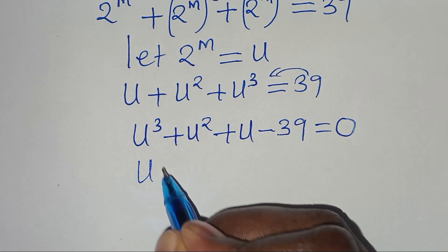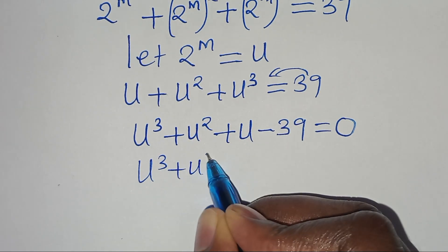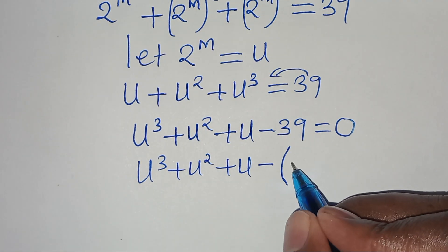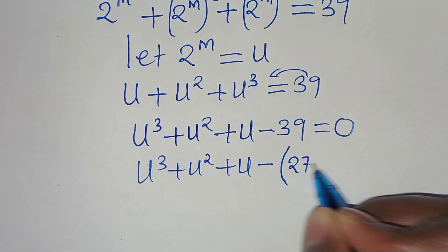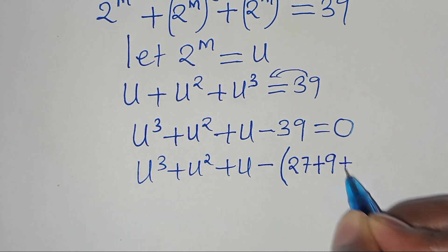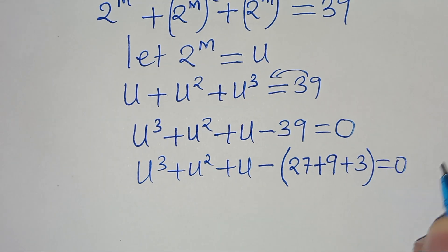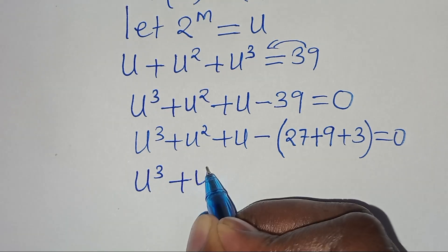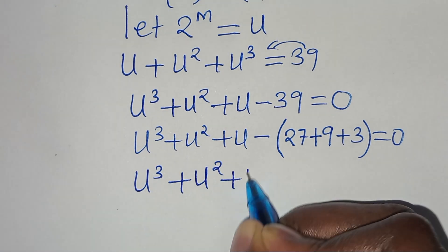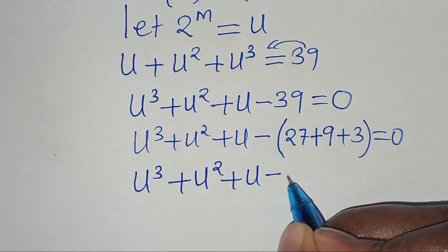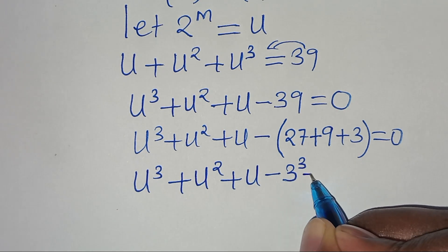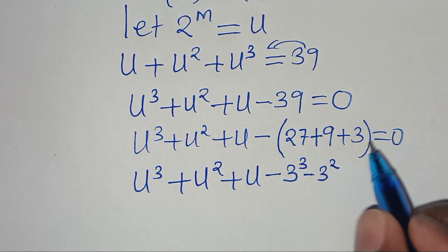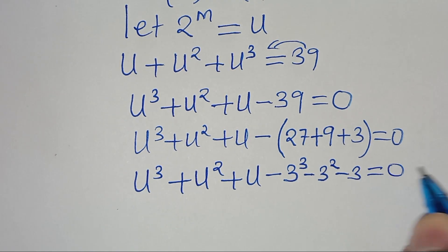Now, we observe that 39 can be expressed as 27 plus 9 plus 3. So we have u³ + u² + u minus 27, where 27 is 3 to the power of 3, minus 9, which is 3 to the power of 2, minus 3. This is equal to 0.